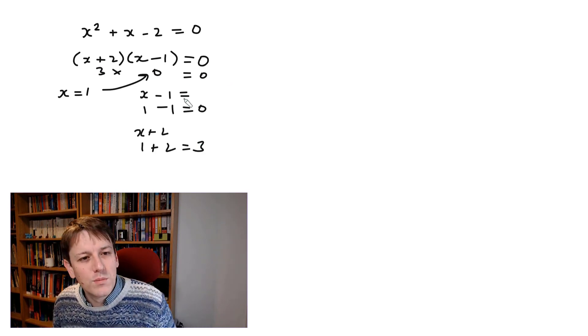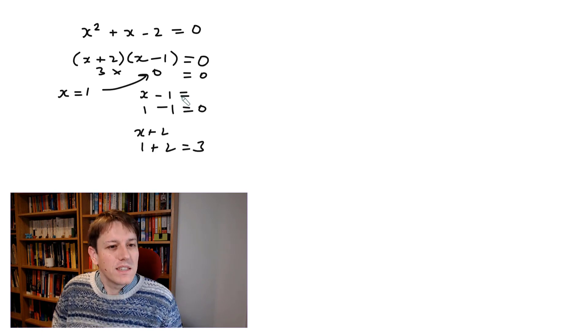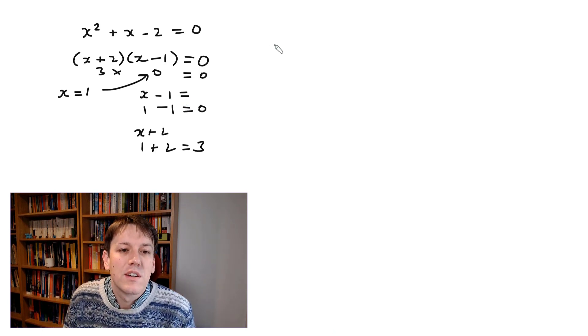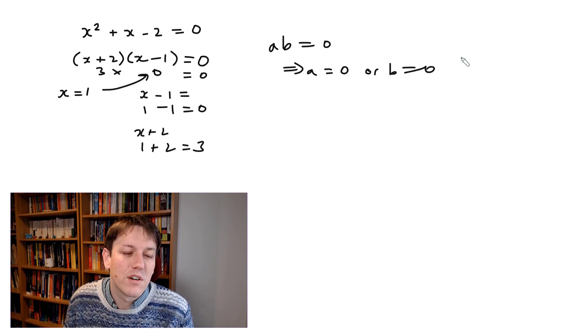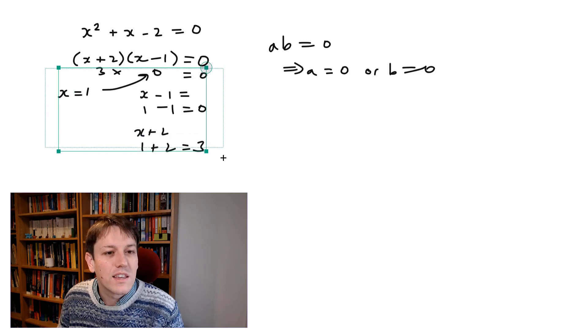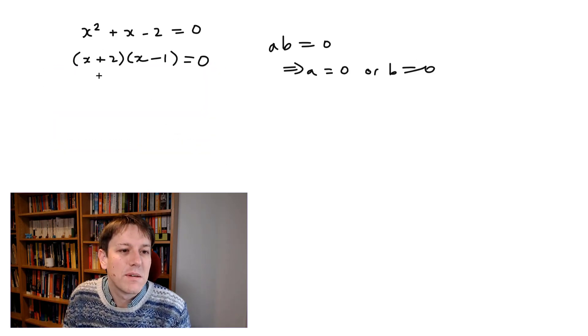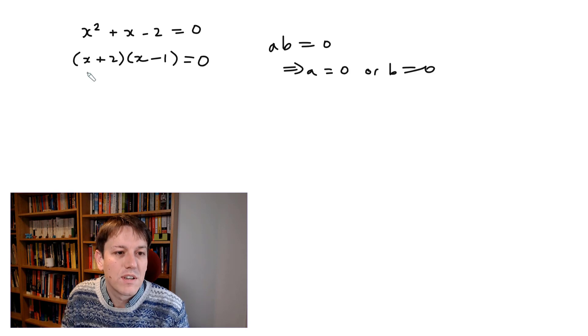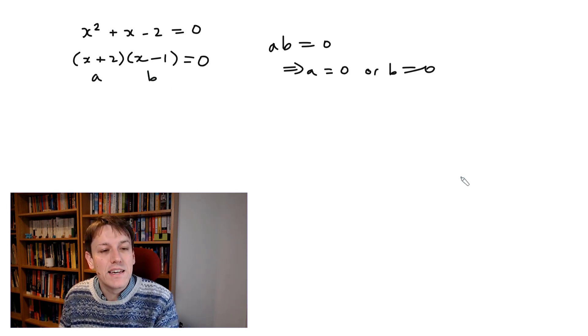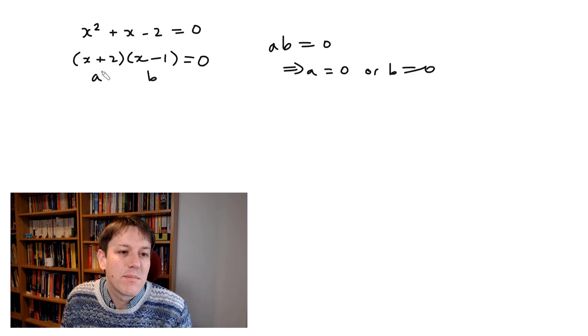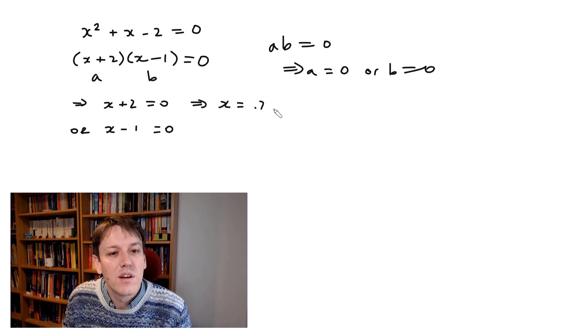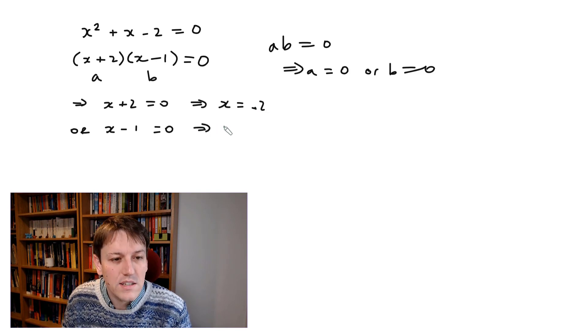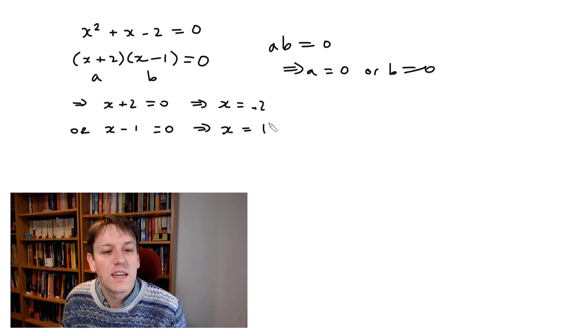So, the reason this factorized form is nice is that we can make this argument the other way around. Because a times b = 0 implies that a is 0 or b = 0, if I get to the point in an equation where I've got this, the x + 2 here is going to be my a, and this is going to be my b. Well, that means that either x + 2 is 0, or x - 1 = 0. And x + 2 is 0 gives x = -2, and x - 1 is 0 gives x = +1.